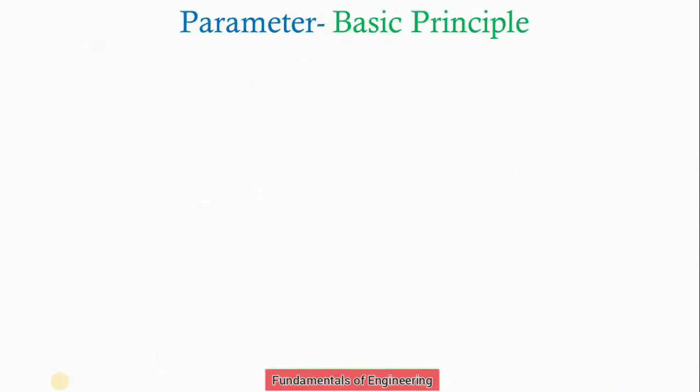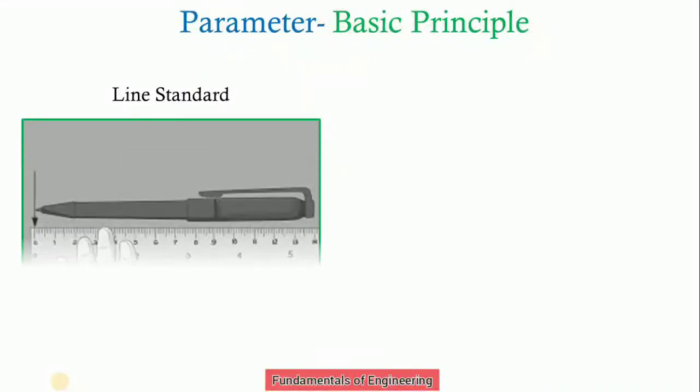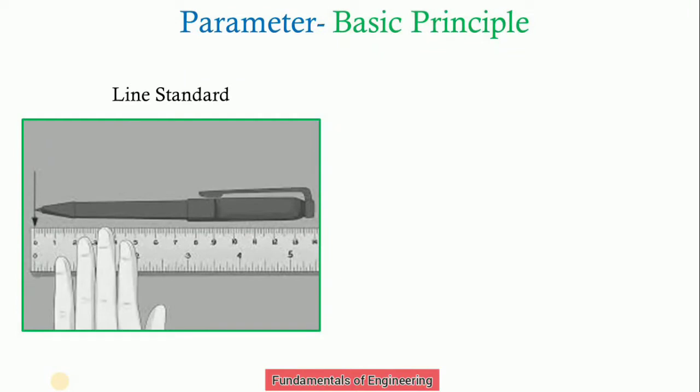First we will see the difference or basic principle for line standard and end standard. If we consider line standard, when the length being measured is expressed as the distance between two lines, then it is called a line standard. Examples are measuring scales, imperial standard yard and international prototype meter.